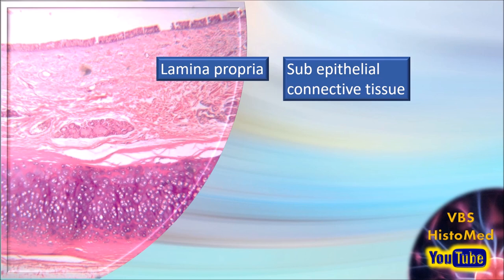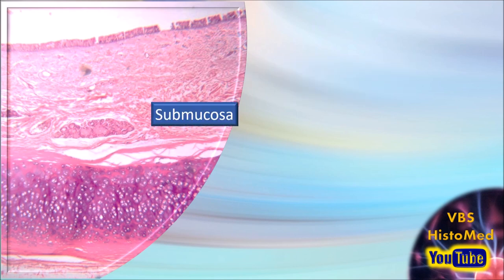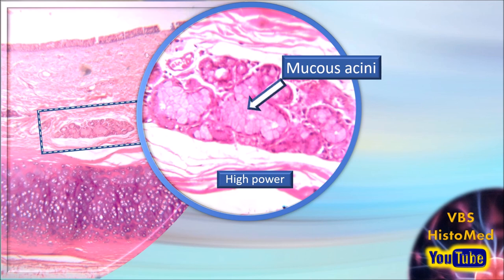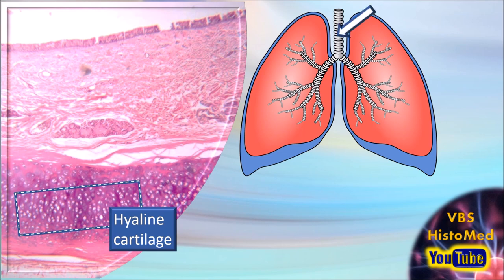The next layer is the lamina propria — generally loose connective tissue, otherwise featureless. Its boundary with the sub-mucosa is a layer of elastic fibers. Next, the sub-mucosa is a slightly denser connective tissue. There will be serous and mucous glands — here you can see a mucous gland pointed out. At a slightly higher magnification you can see mucous acini and slightly darker serous acini. The mucous ones show a soap-bubble appearance, almost empty because the mucus has been washed out, while the more eosinophilic cells are the serous acini.